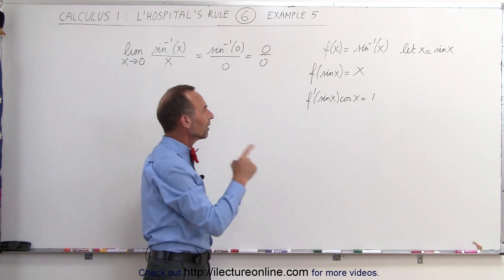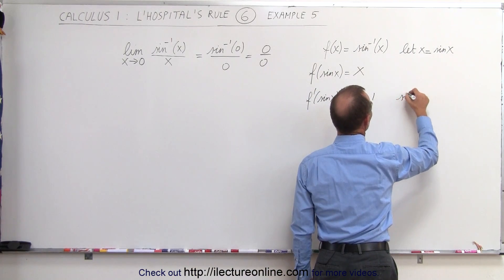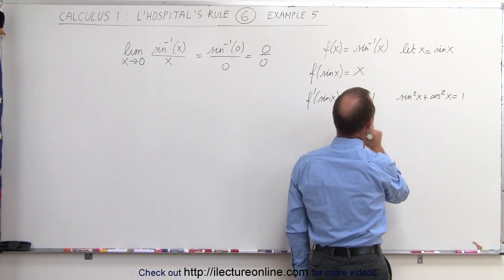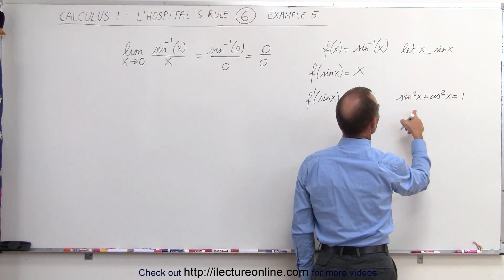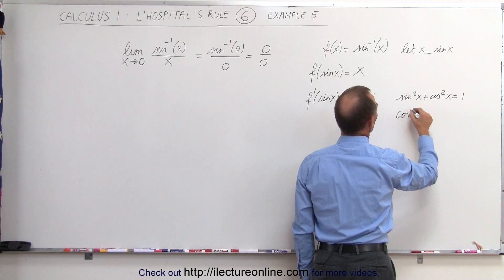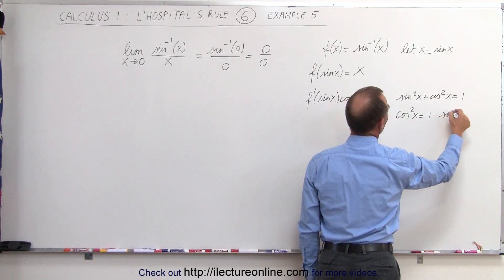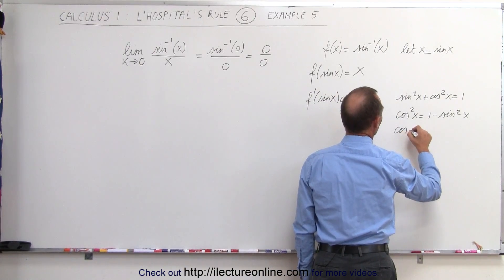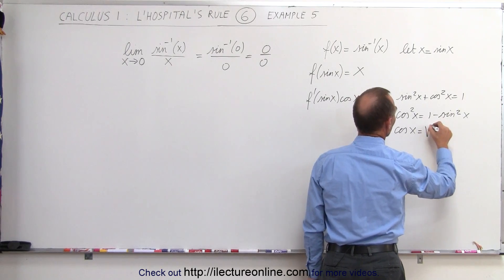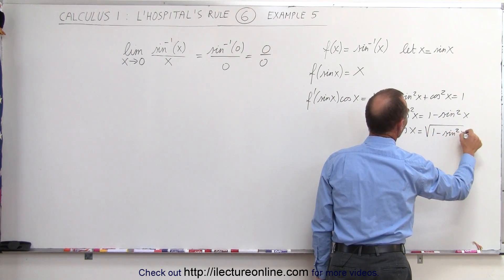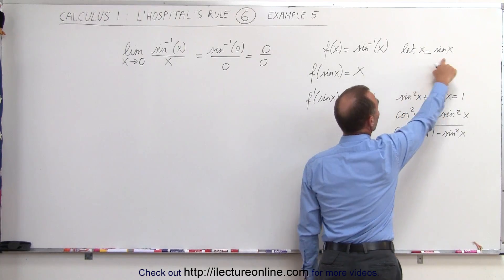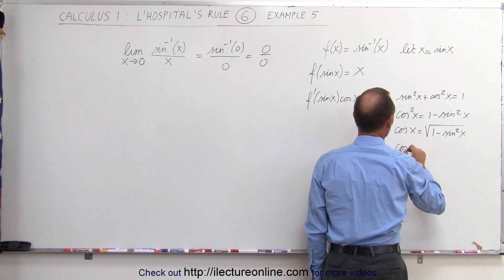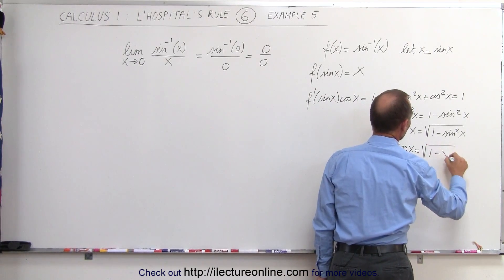Now we want a relationship between the cosine and the sine. We know that sin²(x) + cos²(x) = 1, which means cos²(x) = 1 − sin²(x). Taking the square root of both sides, we get cosine of x equals the square root of 1 minus sin²(x). But since we took the assumption that sine of x equals x, we replace sine of x with x and get cosine of x equals the square root of 1 minus x squared.